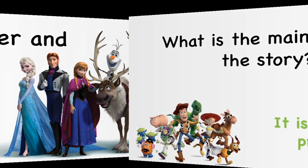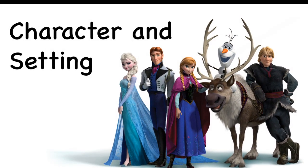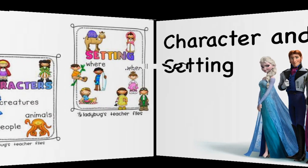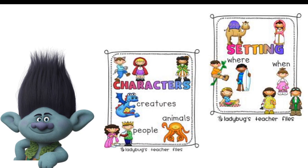Now we will continue with character and setting. Character is a person or animal acting in the story — people or animals acting in the story, we call them characters. Setting is the place and also the time when the action happened — where and when the action happened.